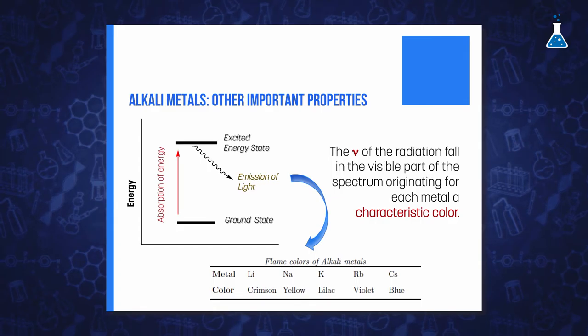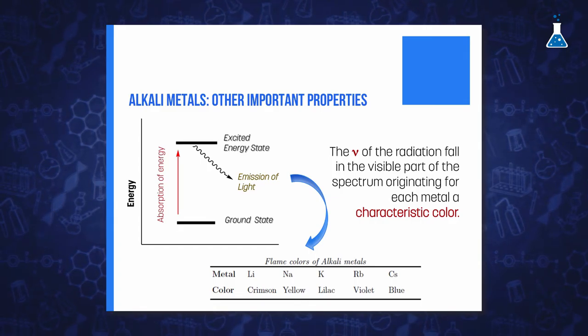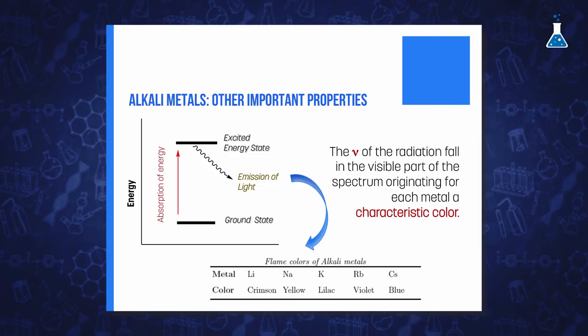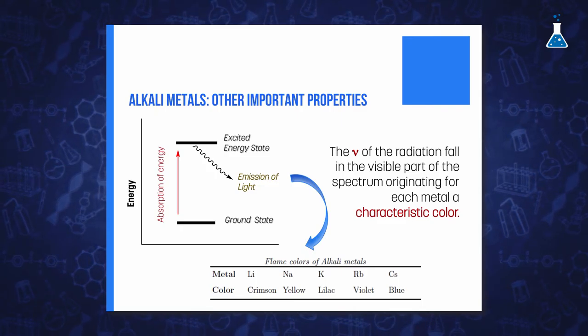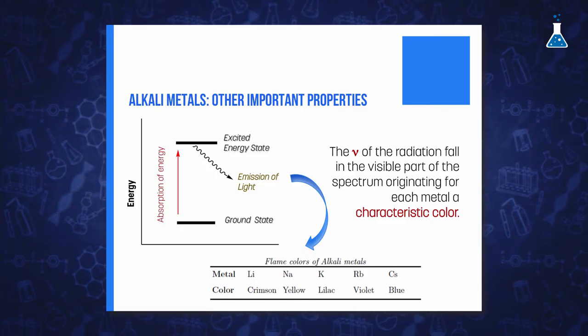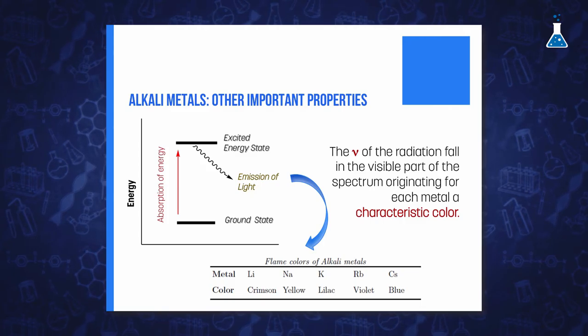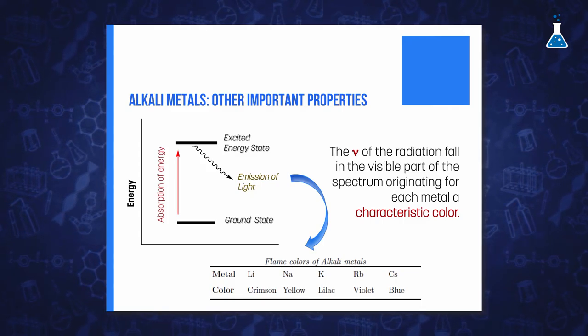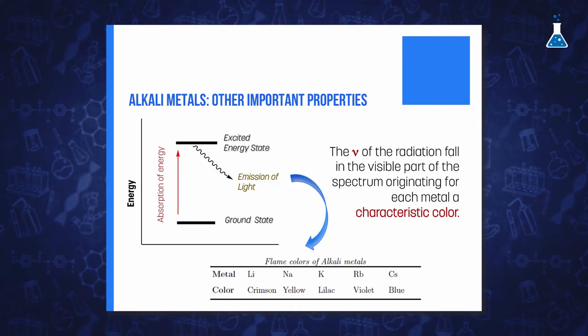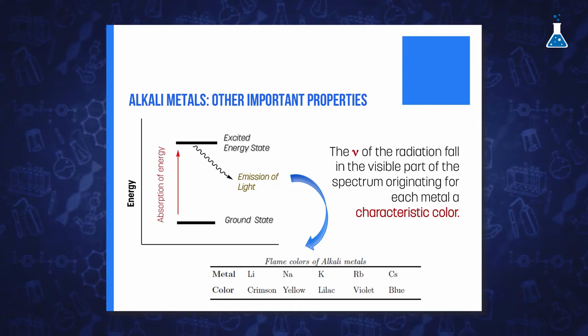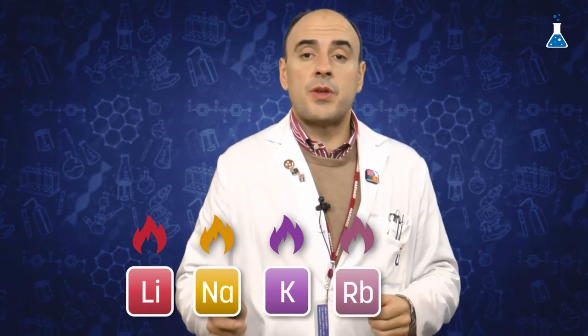The color arises because the energy of the burning gas causes the promotion of the electron in the outer valence shell to excited states, which finally returns to the ground state, giving off the extra energy in the form of electromagnetic radiation. The frequency of the radiation falls in the visible part of the spectrum, which gives each metal a characteristic color. The observed colors are crimson for lithium, yellow for sodium, lilac for potassium, violet for rubidium, and blue for cesium.